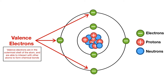An atom is composed of a nucleus and electrons revolving around the nucleus. The nucleus contains the protons and neutrons. The inside electrons are called core electrons and the outermost shell electrons are called valence electrons. Valence electrons are in the outermost shell of the atom and are able to interact with other atoms to form chemical bonds.